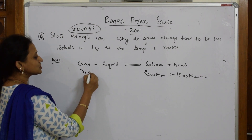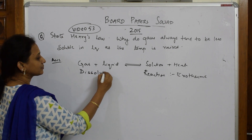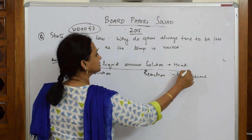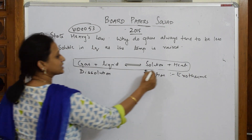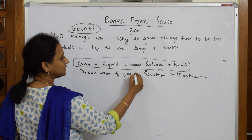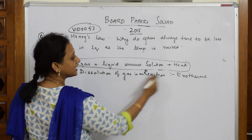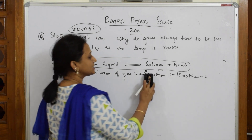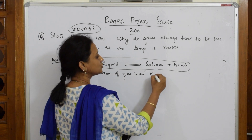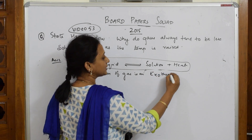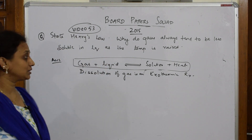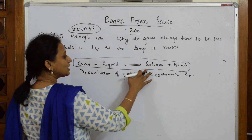This process of gas dissolving in liquid is called dissolution. So write this in a box first so the examiner knows what you're explaining. Write: 'Dissolution of gas is an exothermic reaction.' Now observe carefully — they want us to explain why gases are less soluble.